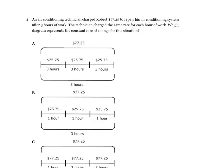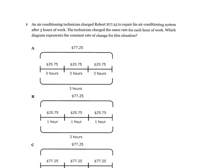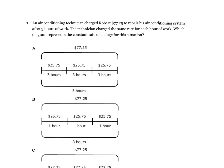An air conditioning technician charged Robert $77.25 to repair his air conditioning system after three hours of work. The technician charged the same rate for each hour of work. Which diagram represents the constant rate of change for this situation? Key information: $77.25, three hours of work, the same rate for each hour, and the constant rate of change.